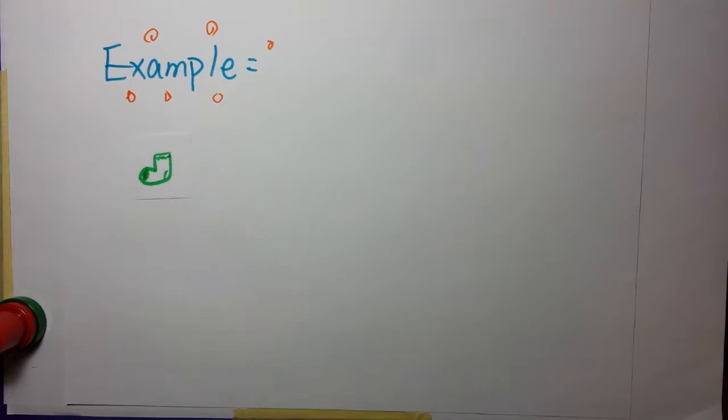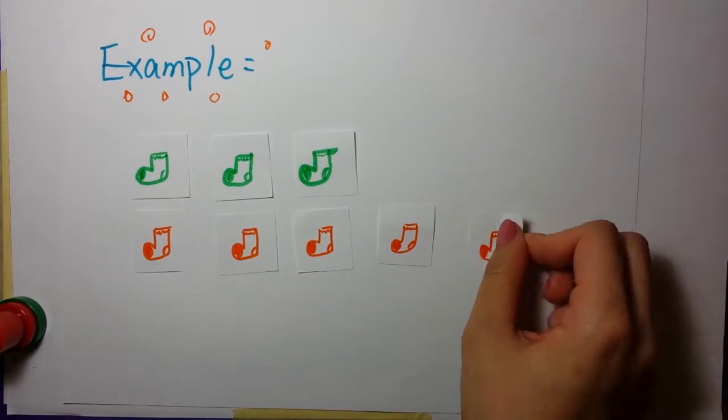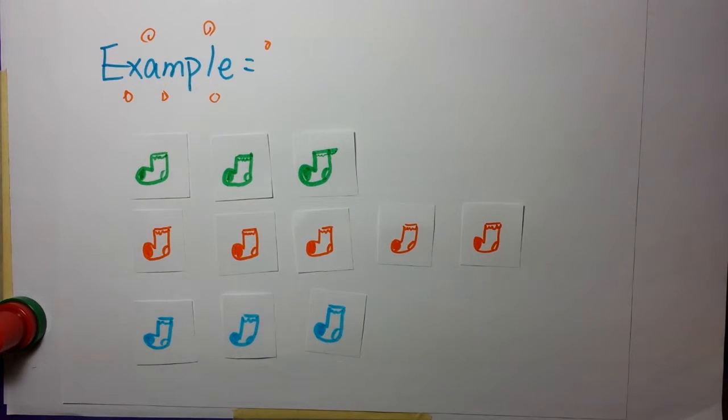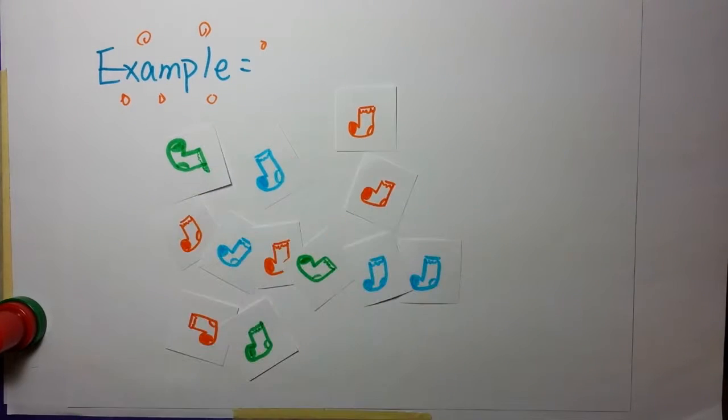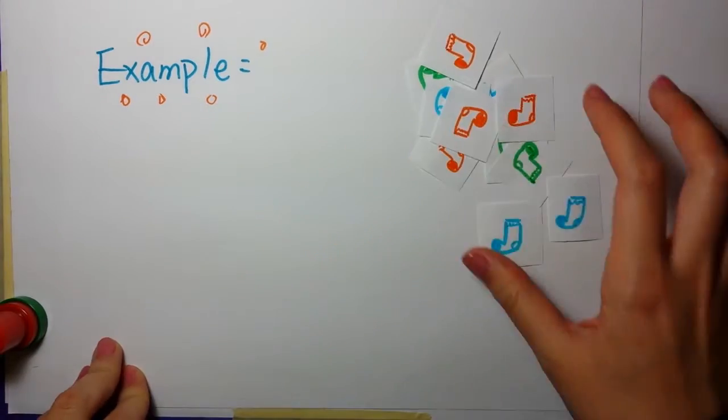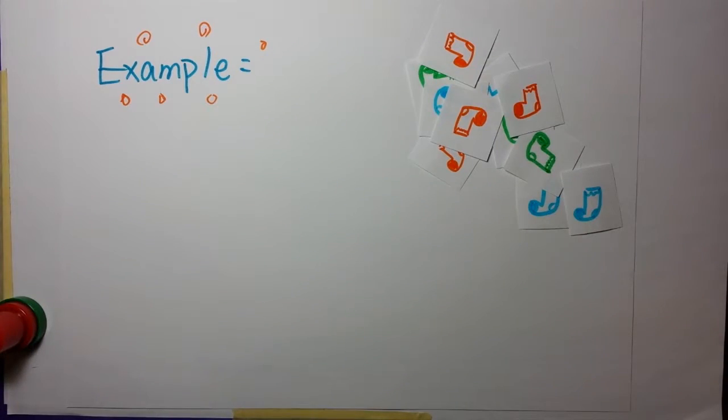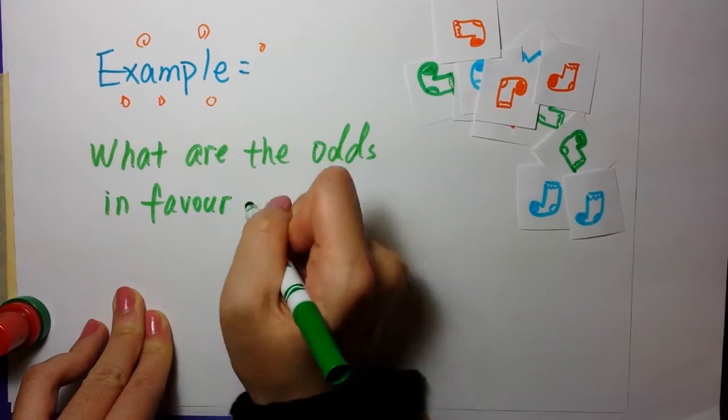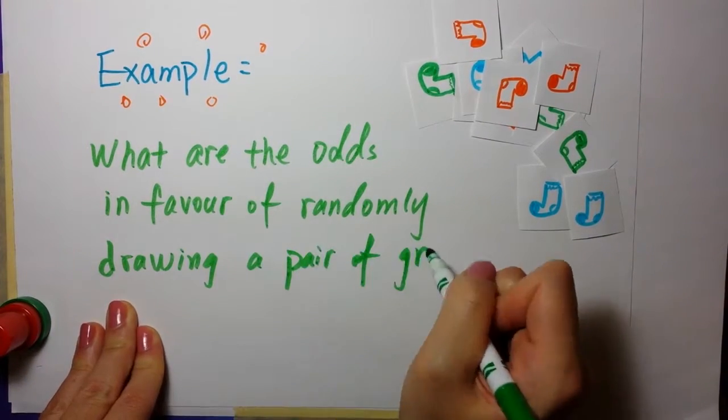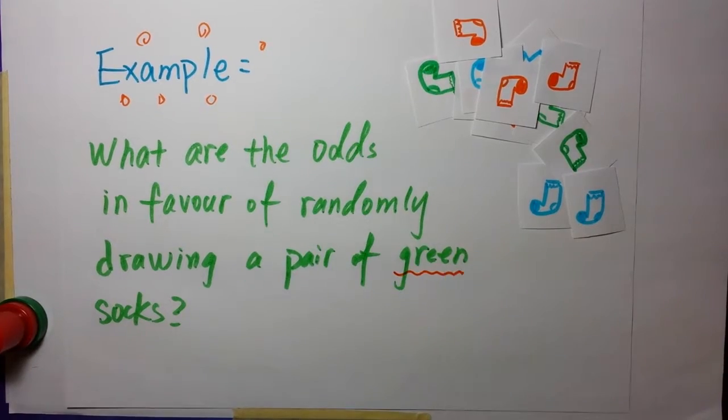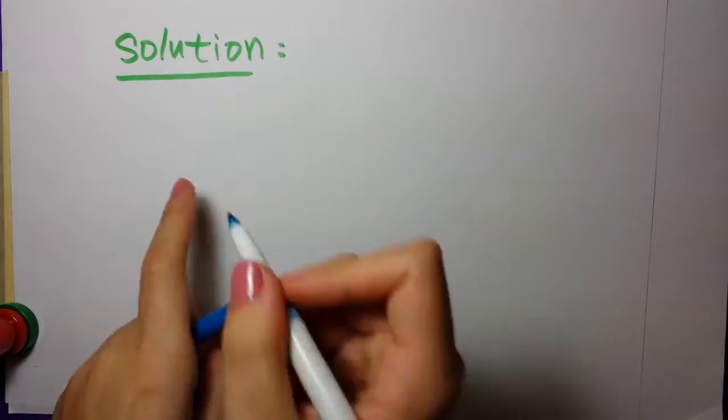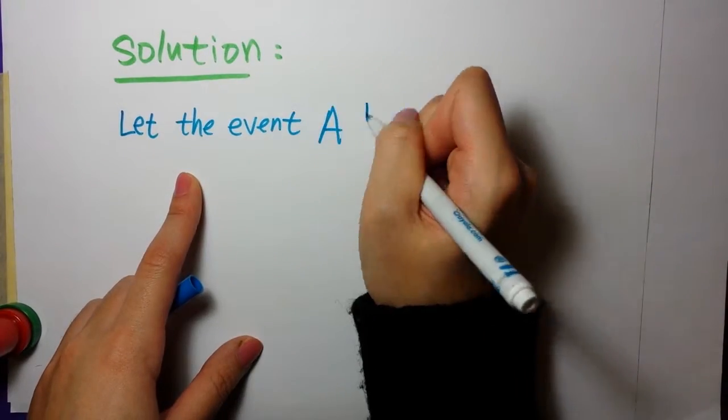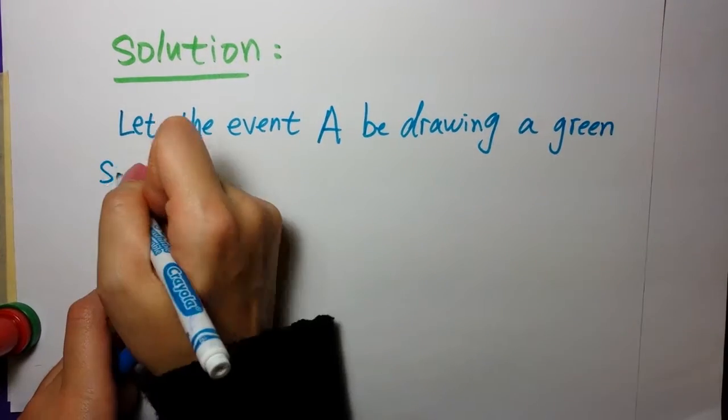Let's do an example together. If there are three green socks, five orange socks, and four blue socks in a messy drawer, what are the odds in favor of randomly drawing a green sock from the drawer? Let the event A be drawing a green sock.